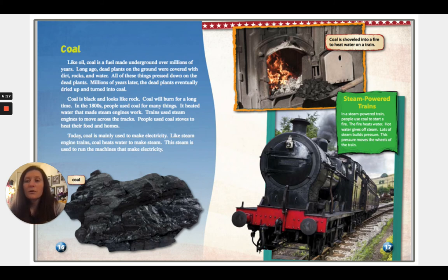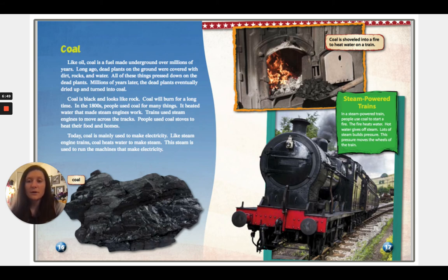Like oil, coal is a fuel made underground over thousands of years. Long ago, dead plants on the ground were covered with dirt, rocks, and water. All of these things pressed down on the dead plants, and eventually they dried up and turned into coal. Coal is black and looks like rock. Coal will burn for a long time. In the 1800s, people used coal for many things — it heated water that made steam engines work, and people used coal stoves to heat their food and homes. Today, coal is mainly used to make electricity; it heats water to make steam, which runs the machines that generate electricity.